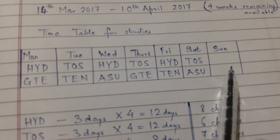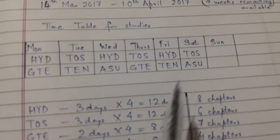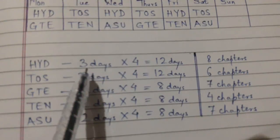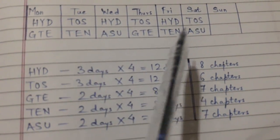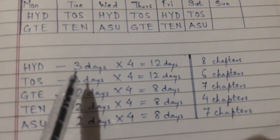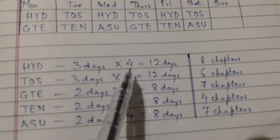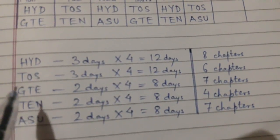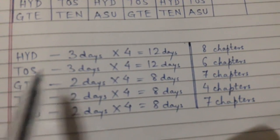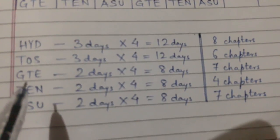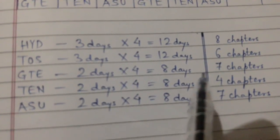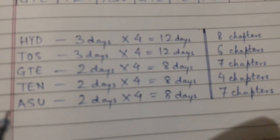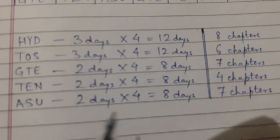Over four weeks, this gives 12 days each for Hydraulics and TOS, and 8 days each for GTE, TEN, and ASU. Sunday also provides additional buffer time each week if any subject falls behind.